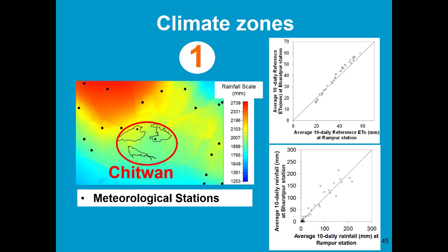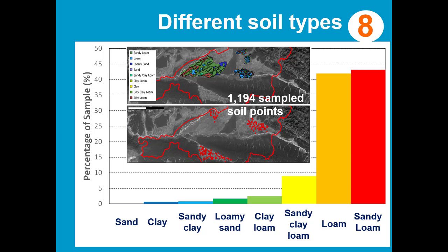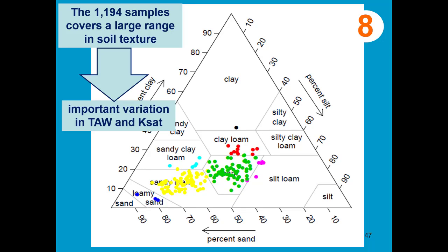So we can consider only one climate zone for that region. There is a huge variation in soil types. In total, 1194 soils were sampled, and there are 8 different soil types. The most important soil types are the sandy loam, the loam, and the sandy clay loam. If you plot the texture on the textural triangle, we can see an important variation in sand and clay content.